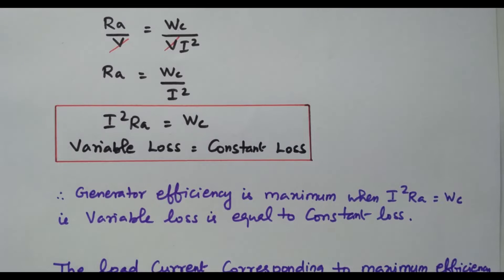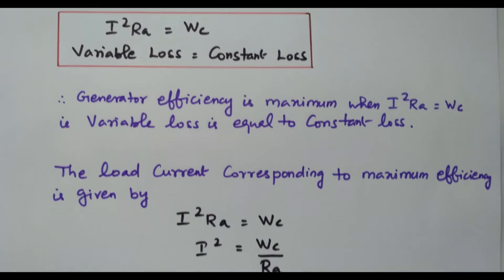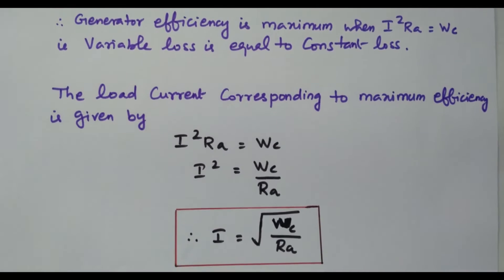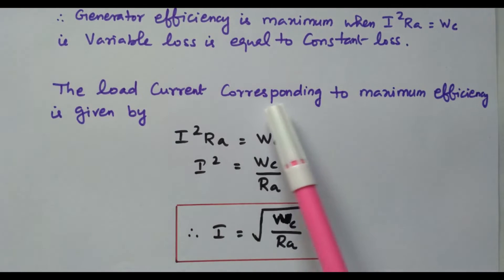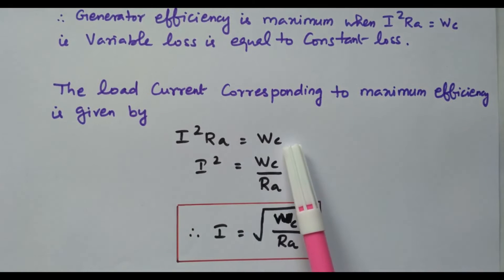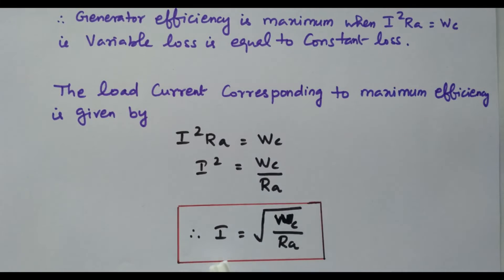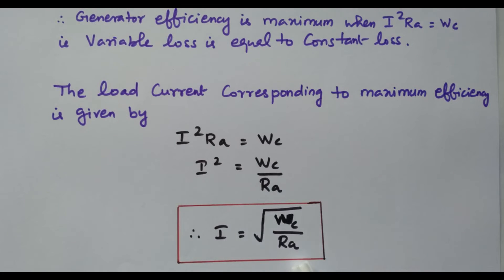We can also find the load current corresponding to maximum efficiency. From I²RA = WC, we get I² = WC/RA. Taking the square root on both sides: I = √(WC/RA). This expression gives the load current at which the DC generator operates at maximum efficiency.